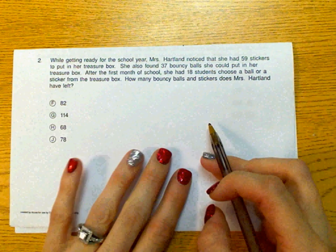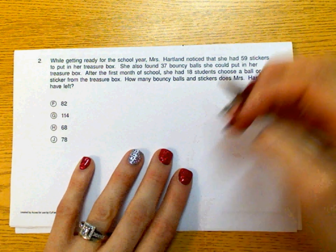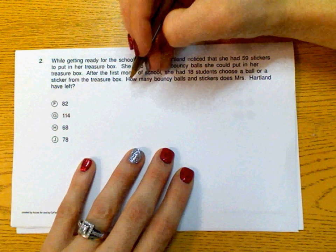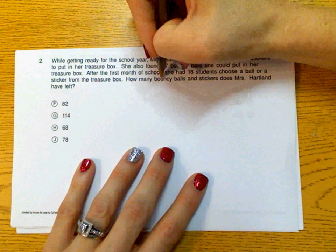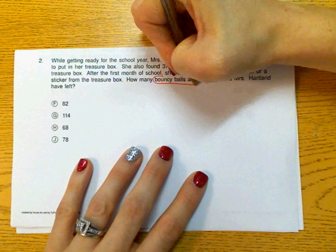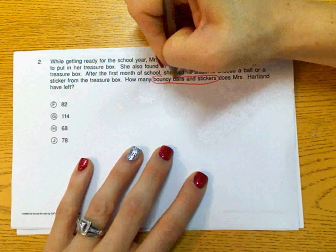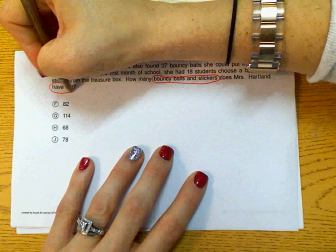The first thing that your student needs to do is go through and find the important information. We want to know what our problem is about, so we're going to look at the question. How many bouncy balls and stickers does Mrs. Hartland have left? So we want to circle bouncy balls and stickers because that's what we're talking about, and we want to circle 'have left' because that's important.